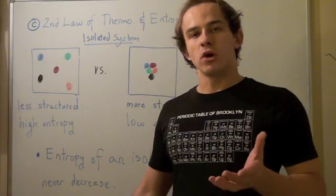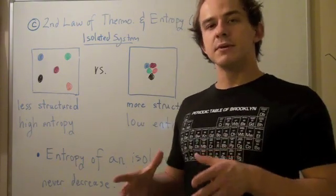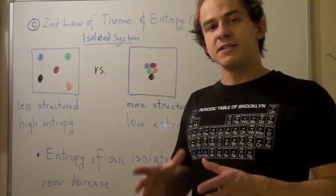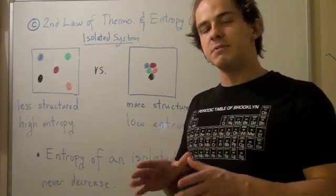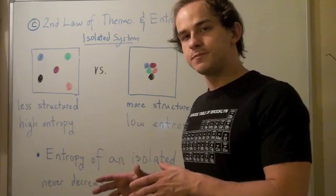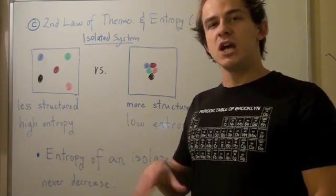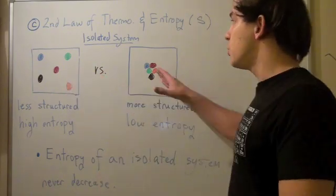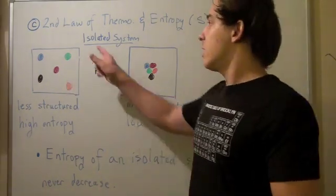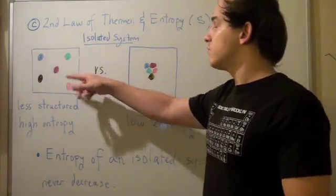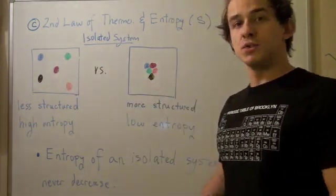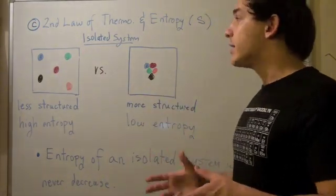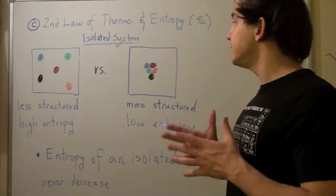Now let's explore the relationship between the second law of thermodynamics and entropy. In another video, we saw that the second law of thermodynamics basically states that heat cannot be completely converted into work. Here we will see a slightly different definition of the second law of thermodynamics. So let's explore these two isolated systems that are the same size, have the same number of molecules, and the same type of molecules. Let's use entropy to find out which one is more probable.